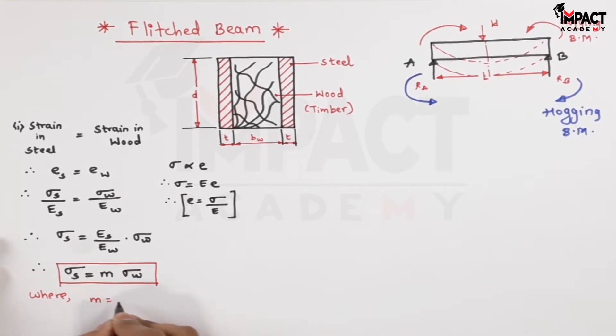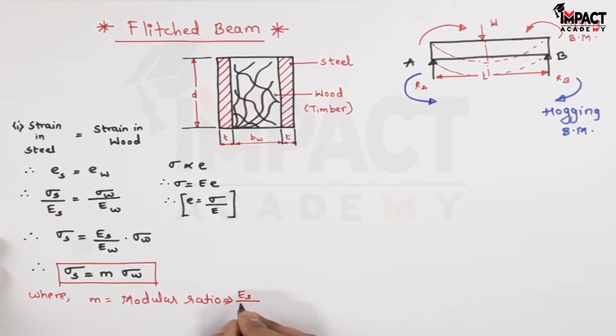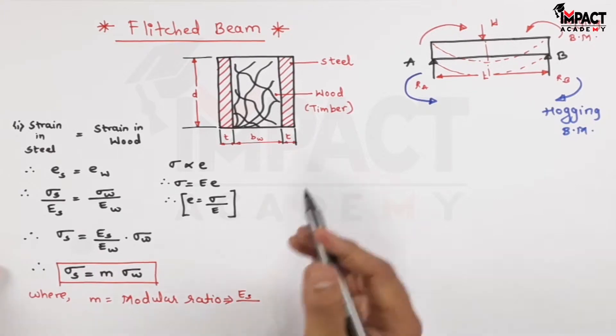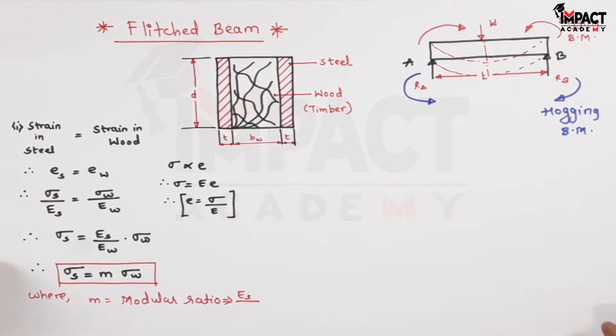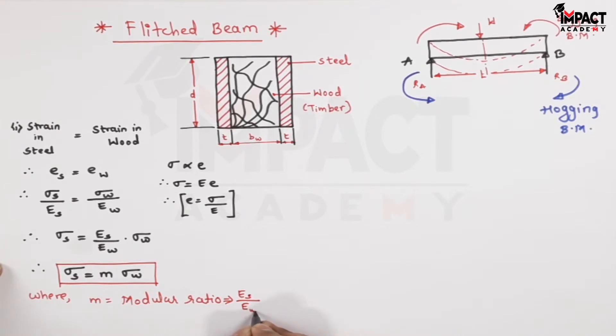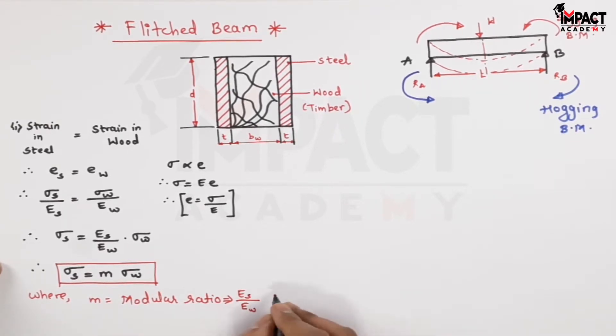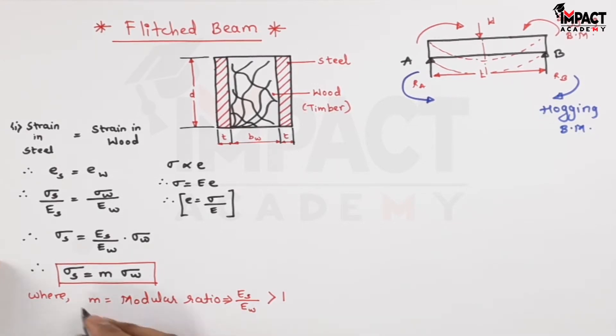And that modular ratio is given by the Young's modulus of the greater value. That is when we compare steel with wood, steel is going to have more modulus of elasticity because it is an elastic or ductile material whereas wood is brittle, so having less value of Young's modulus. So this modular ratio is greater than one.